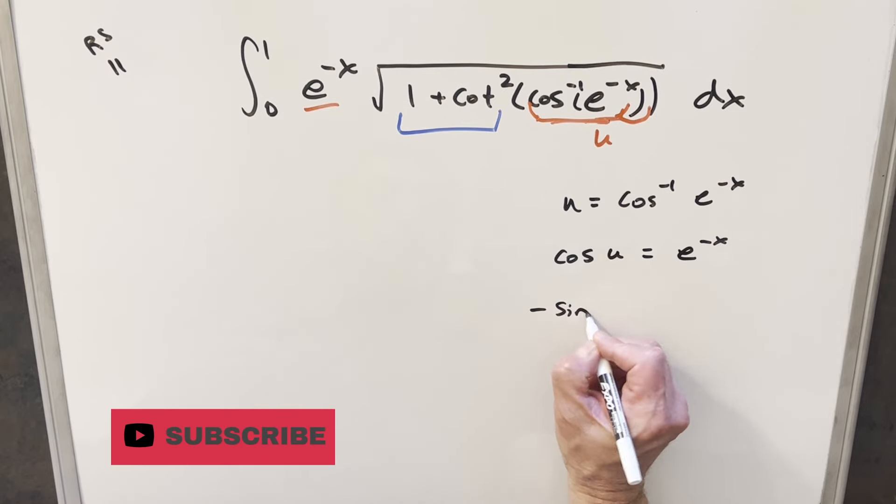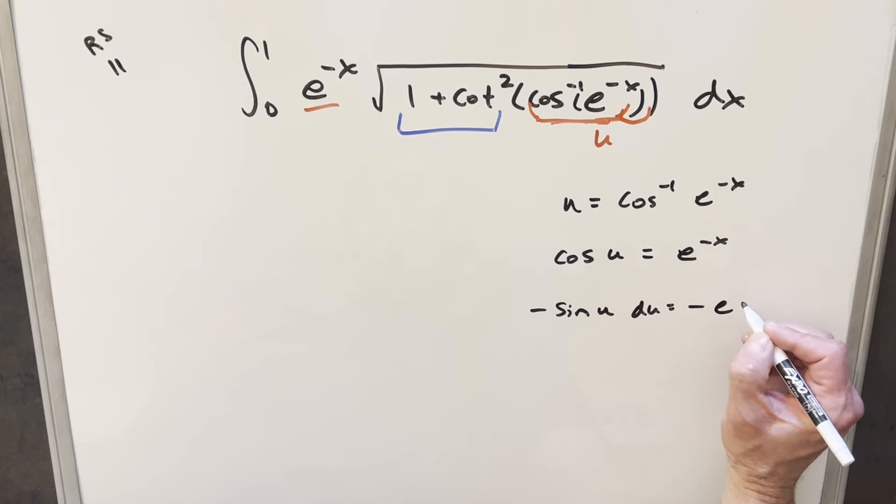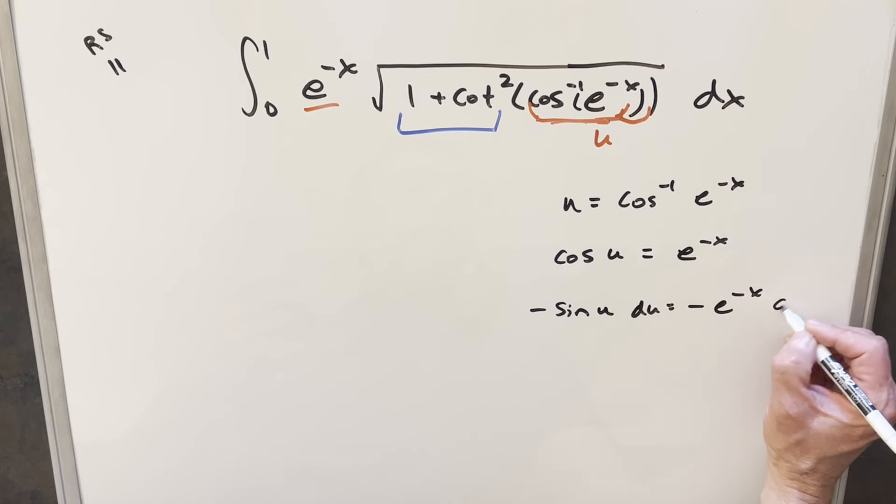This is going to give me minus sine u du. And here the derivative is going to be minus e minus x dx.